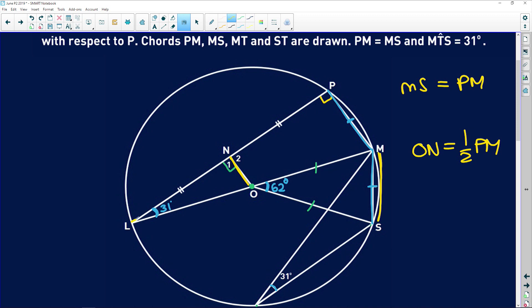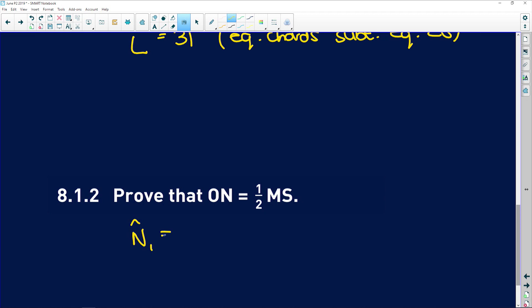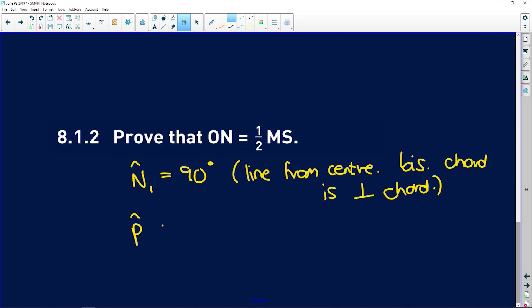So if we look in this triangle here, in this yellow triangle. We know that this point here is the midpoint of this side LP because we were given that these two sides are equal. So N is the midpoint. We also know that N1 is 90 degrees because of line from center bisecting the chord is perpendicular to the chord. And we also know that P is 90 degrees because of angle in a semicircle. So let's write that down. N1 is equal to 90 degrees. Line from center bisecting the chord is perpendicular to the chord. And we found that angle P is 90 degrees because of angle in a semicircle.